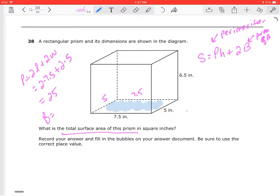And my area, my big B, is equal to length. So base times height, so 7.5 times 5, which is going to be 37.5.